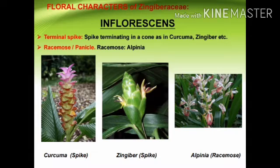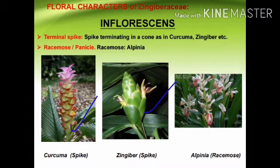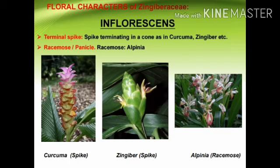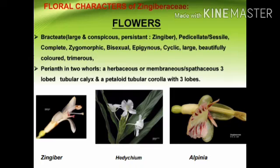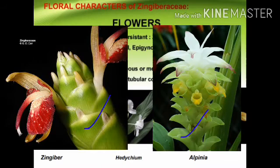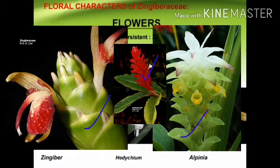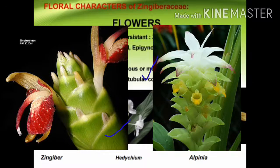The floral characters: the inflorescence consists of terminal spike, raceme, or panicle. In Curcuma species the inflorescence is a spike terminating in a coma — it is coma-like. In Alpinia the inflorescence is a racemose type and also a spike. Flowers are bracteate and the bracts are very large and conspicuous — conspicuous in turmeric and Alpinia — and in ginger the bract is persistent.